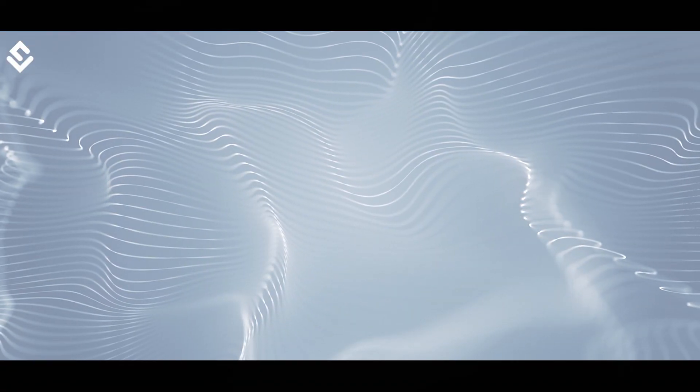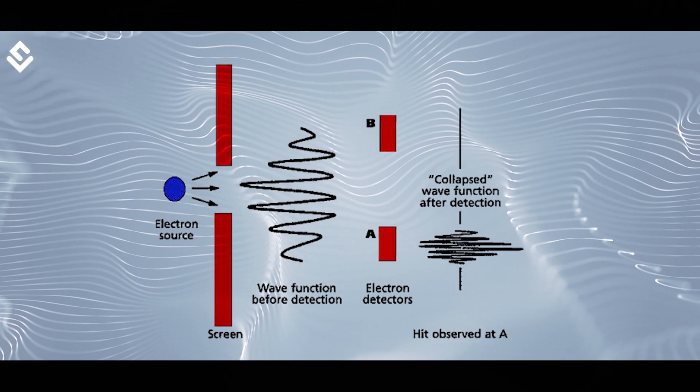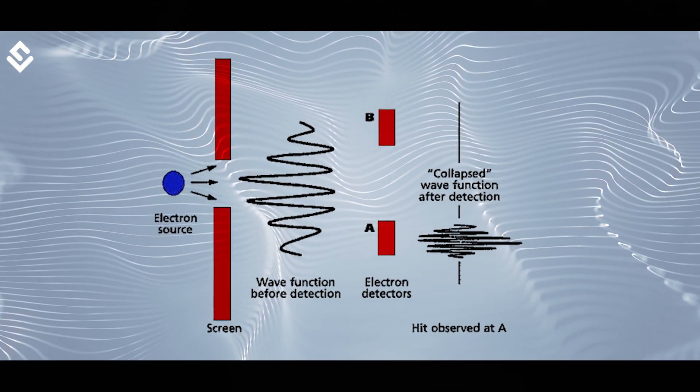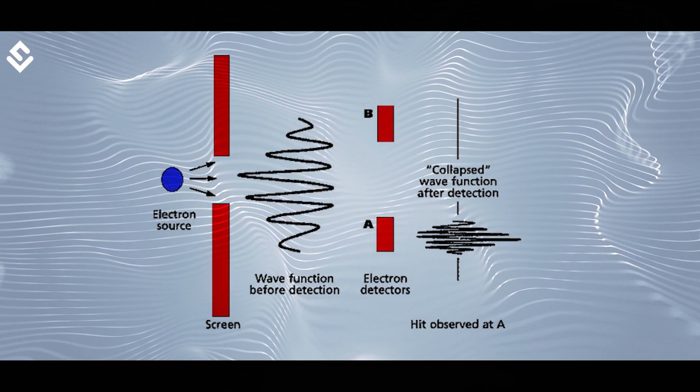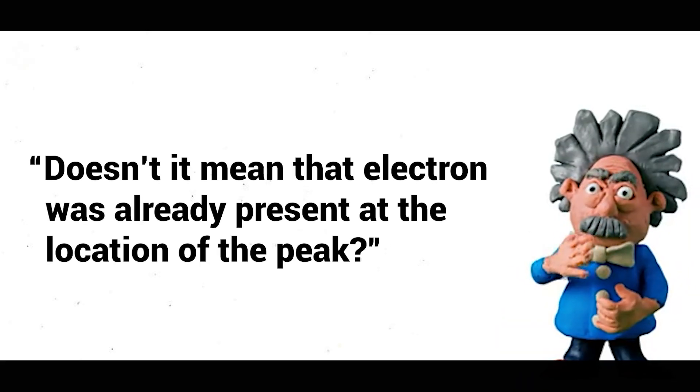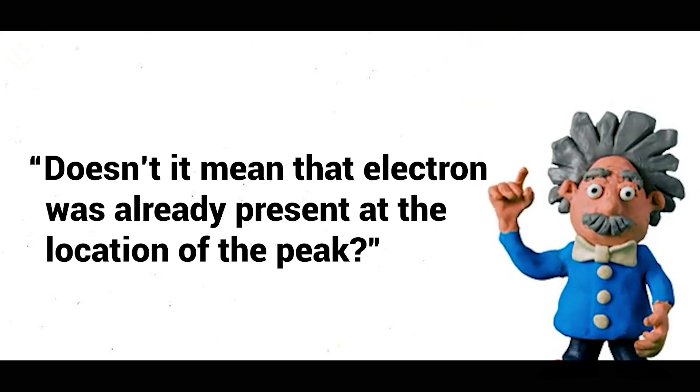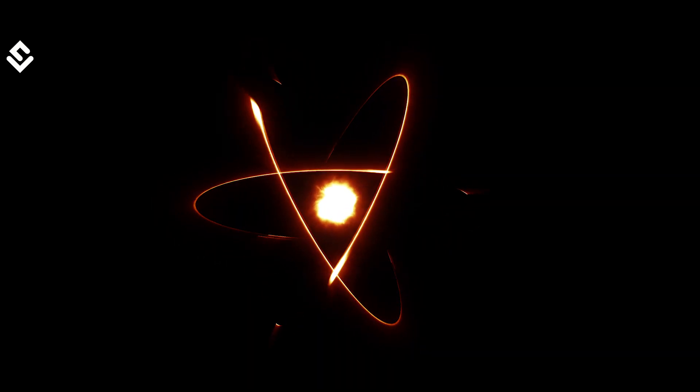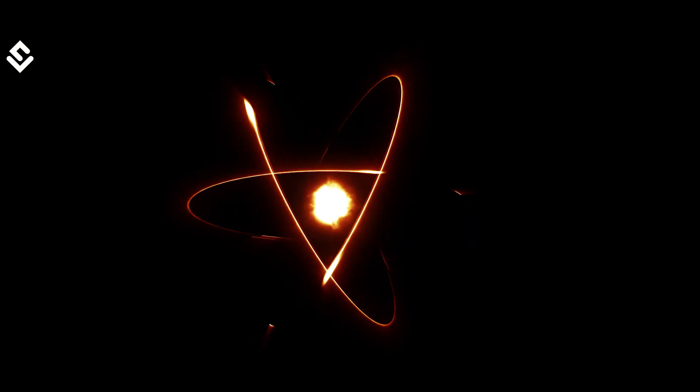Only when some observation happens, wave function collapses at a particular peak, and we get to know certain value of the electron's quantum state. Einstein questioned, doesn't it mean that electron was already present at the location of the peak? Bohr said that there is no meaning of position unless it is measured.